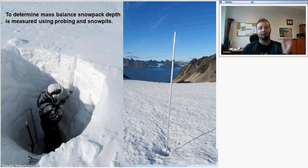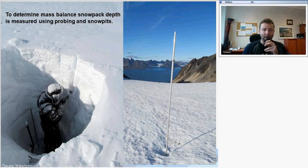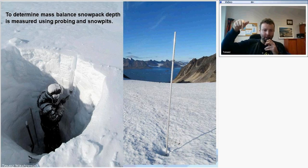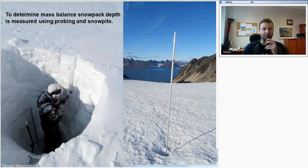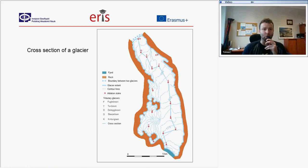In terms of mass balance and snowpack depth, we measure the snow cover using probing and snow pits — we dig through the snow to reach the glacier ice. Then we measure the density of snow to get information about snow water equivalents: how much water would melt from a given thickness of snow.